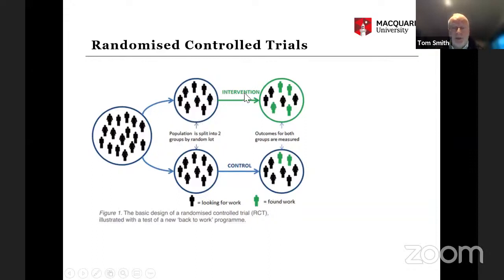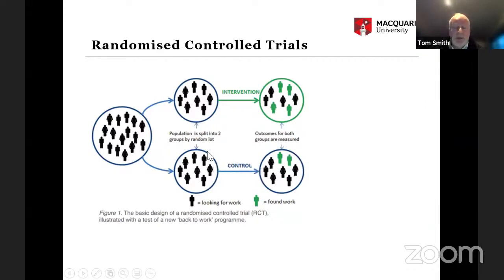In the treatment group, you might give participants job training or skills in writing a CV, then look at the number who find work. To judge whether the intervention worked, you compare the number who found work after the intervention versus the number who found work with no intervention — the control. Of course some people naturally find work, so you see where the intervention aided above what would have happened naturally.